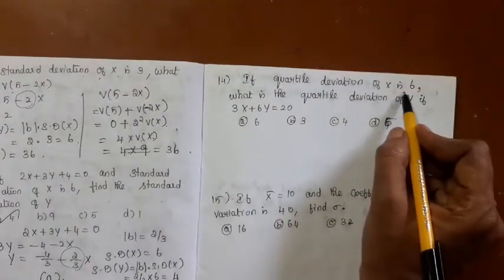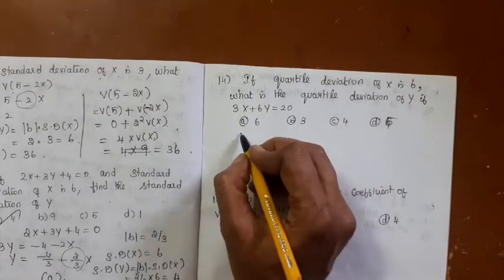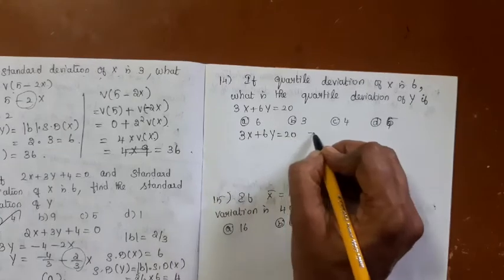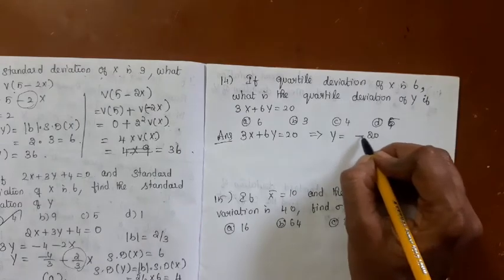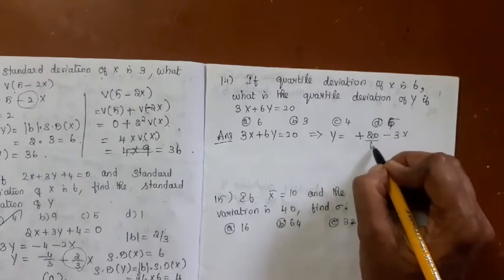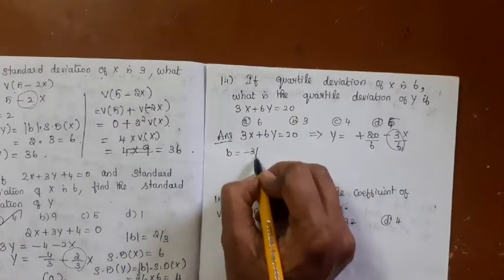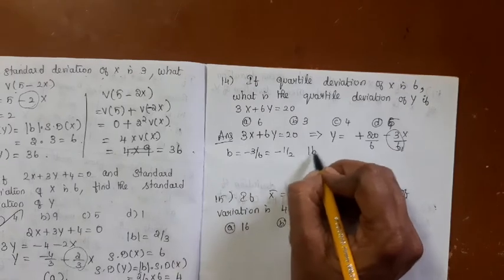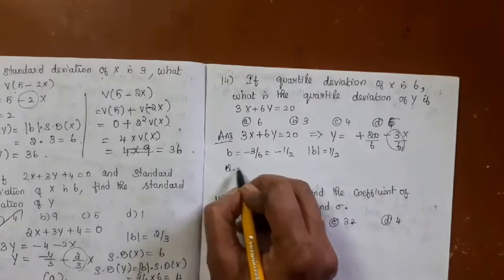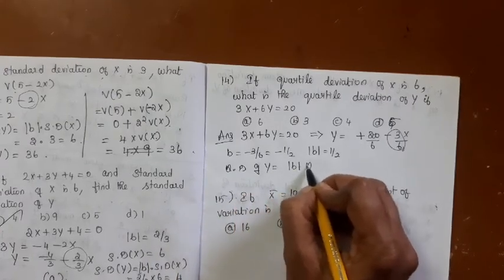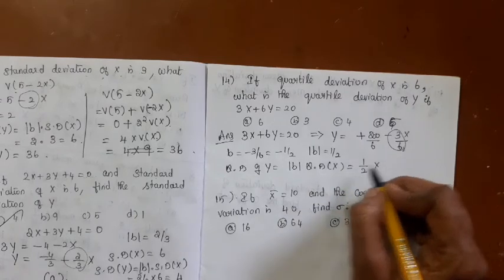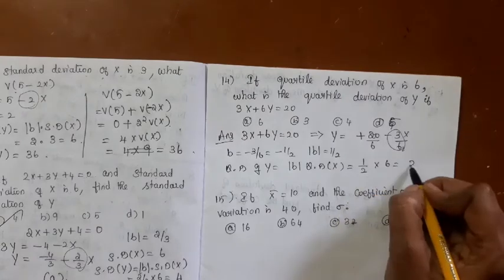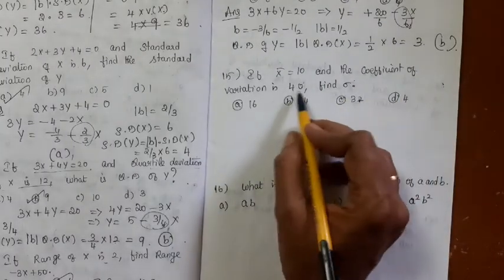If quartile deviation of x is 6 and the relationship is 3x + 6y = 20, find quartile deviation of y. Rearranging: y = (20 - 3x)/6, so b = -3/6 = -1/2, |b| = 1/2. Quartile deviation of y = |b| × QD(x) = (1/2) × 6 = 3. The answer is option B.